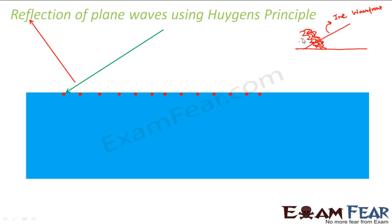When the incident rays fall on the surface, after reflection they will go back somewhat like this. So the reflected wavefront will look somewhat like this. This is my incident wavefront and this is my reflected wavefront. When we study reflection using Huygens principle, we understand it in terms of wavefronts, because Huygens principle talks only in terms of wavefronts — it doesn't talk about light rays or light waves.